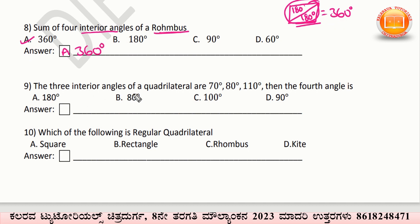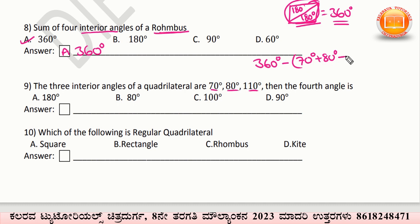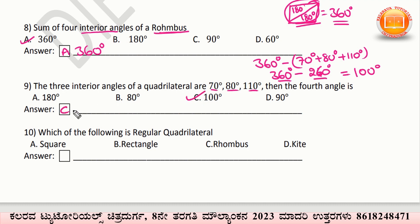The 3 interior angles of the quadrilateral are 70°, 80°, and 110°. The 4th angle: since the sum of 4 angles equals 360°, we subtract these 3 angles from 360°. 360° minus (70° plus 80° plus 110°) equals 360° minus 260°, which gives 100°. Option C — 100° — is the correct answer.